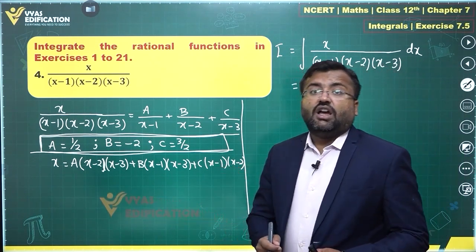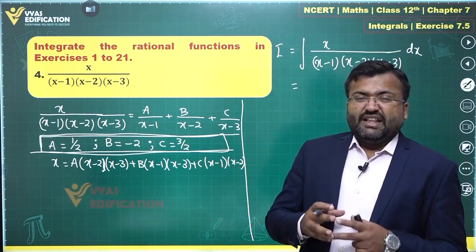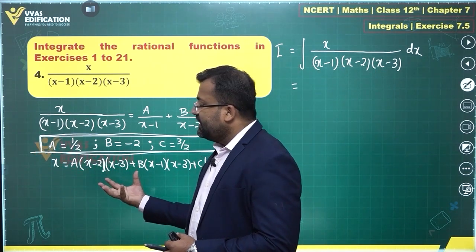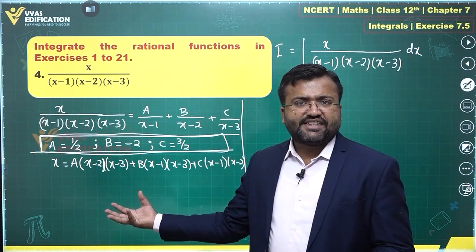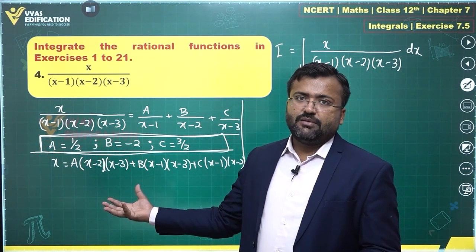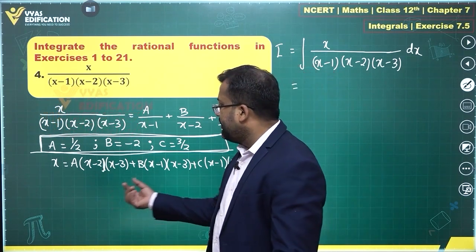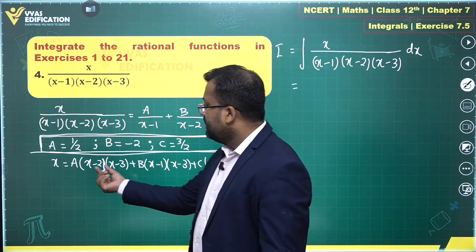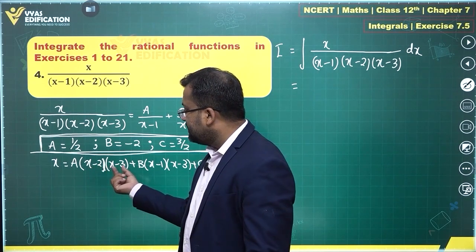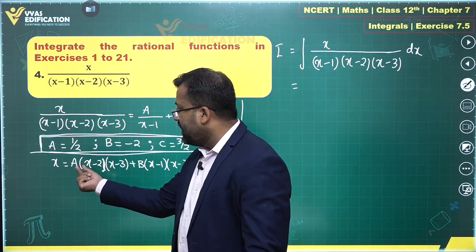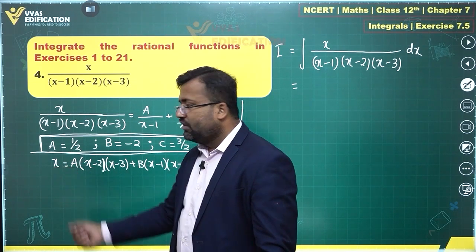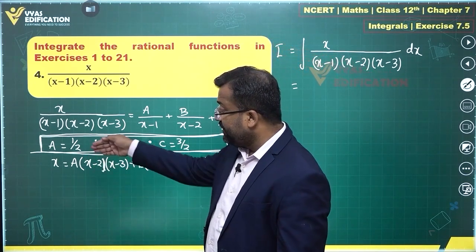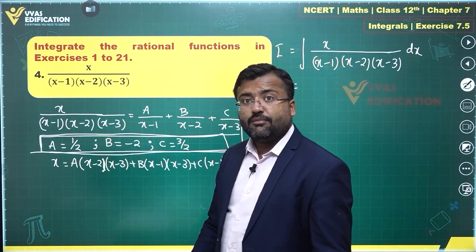Once you have this identity, you substitute particular values of x to find A, B, and C. For example, substituting x equal to 1 makes the B and C terms zero, giving 2A equal to 1, so A equals 1 by 2 — the same result as the shortcut method.